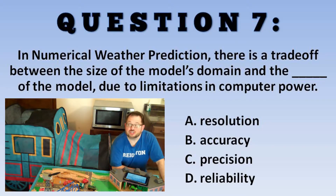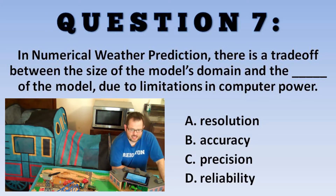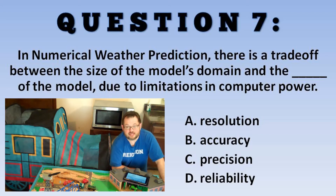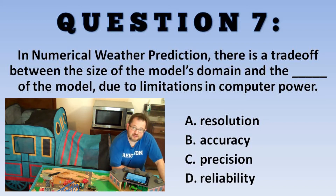Numerical weather prediction is important. It is how we safely conduct our airline system. It helps us know whether or not to open schools. It helps us make predictions about irrigating crops. It is what the weatherman is telling you when you turn on the television. We're going to find out how that's connected to climate in the next video.